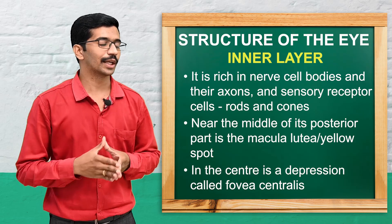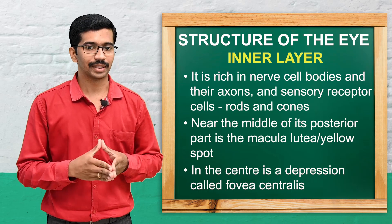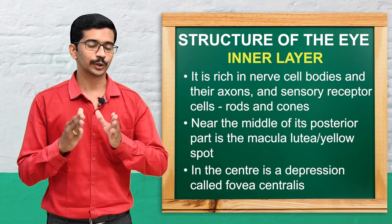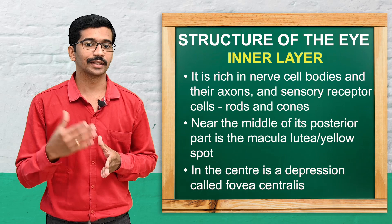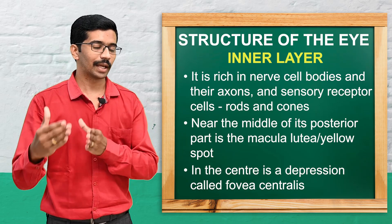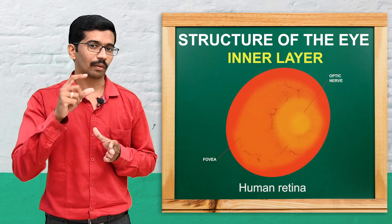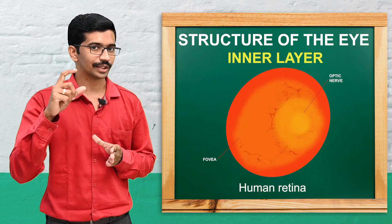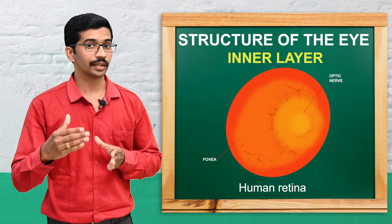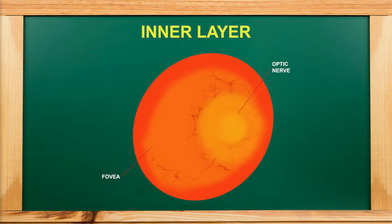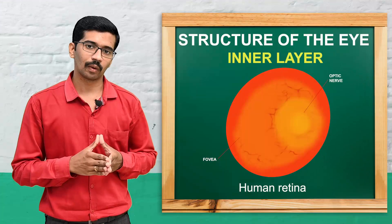On the posterior side of the eyeball near the posterior middle, there is an area called the yellow spot or macula lutea. Within the yellow spot there is a depression termed the fovea centralis. At the back of the eyeball, all the nerve cells from the retina converge and leave as the optic nerve. The area where the optic nerve leaves has no receptor cells and is termed the blind spot or optic disc.